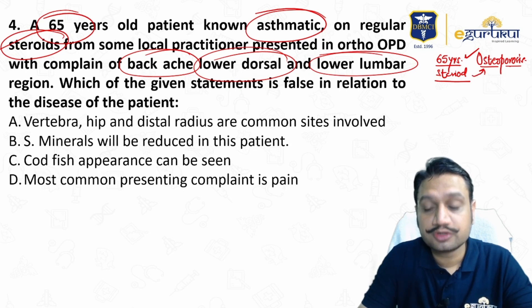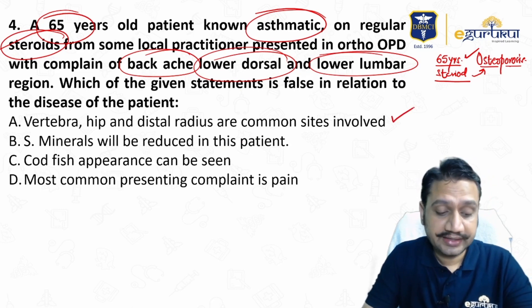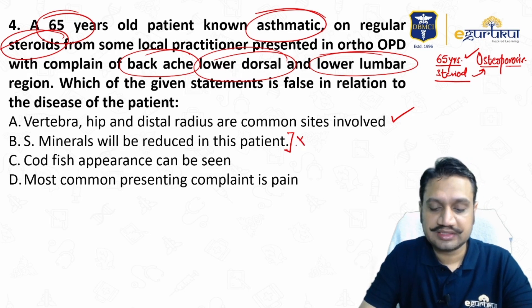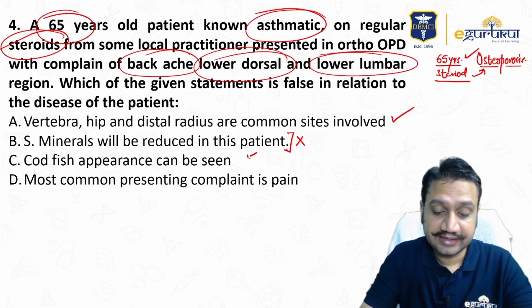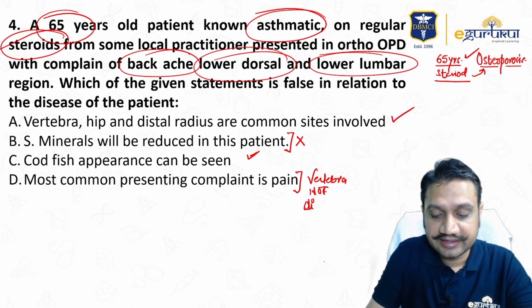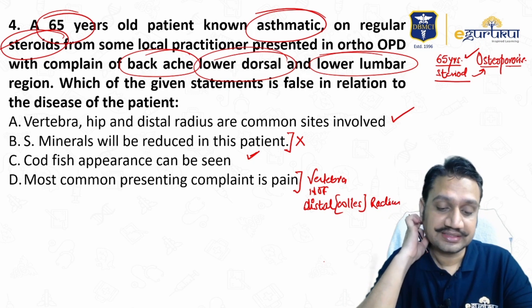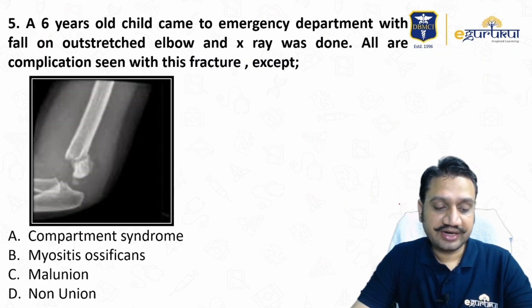Vertebra, hip, and distal radius are common sites involved — that is absolutely correct. Serum minerals are reduced in osteoporosis — that is absolutely wrong, and therefore the false statement. Codfish appearance can be seen — correct. The most common presenting complaint is pain — correct. Common fracture sites include the vertebra, neck of femur, and distal radius, where a Colles' fracture commonly occurs.